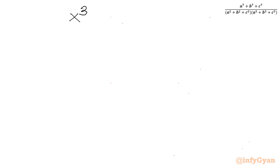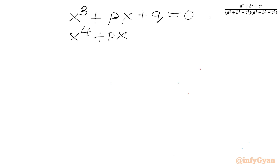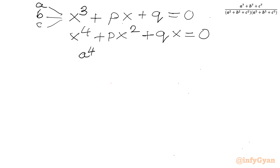Now let me write our cubic equation once: X cubed plus PX plus Q equal to 0. Multiply both sides by X, giving X to the fourth plus PX squared plus QX equal to 0. This equation has roots A, B, and C. Substituting X equal to A: A to the fourth plus P times A squared plus Q times A equals 0.